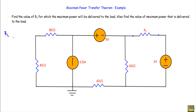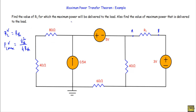From the Maximum Power Transfer Theorem, we know that a load resistor R_L receives maximum power if the value of the load resistor is equal to the Thevenin resistance of the circuit, and the value of maximum power will be equal to V_th squared over 4·R_th. This is our terminal A and this is terminal B. If I can calculate the Thevenin resistance and Thevenin voltage, I can calculate the value of R_L for which the circuit will deliver maximum power to the load.